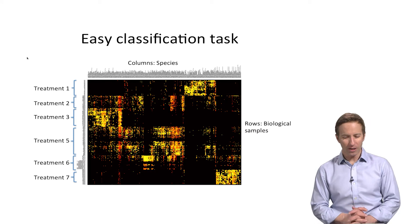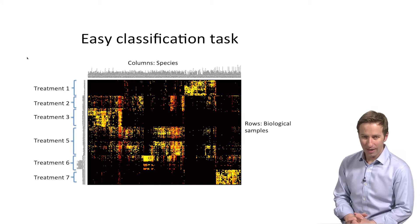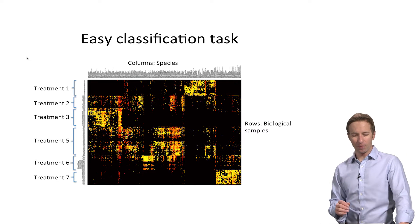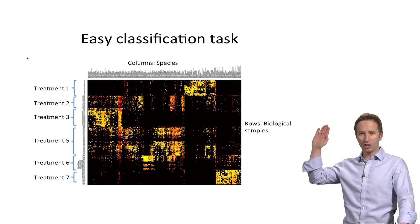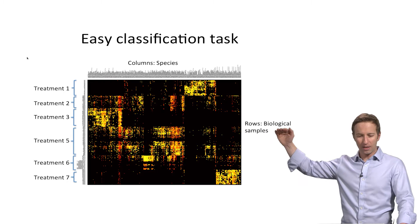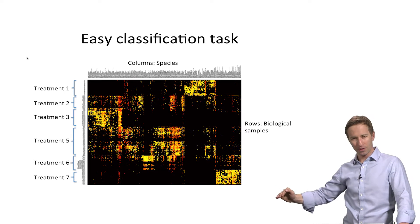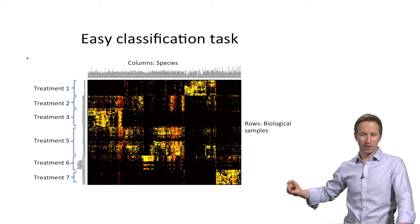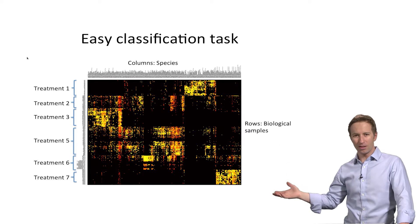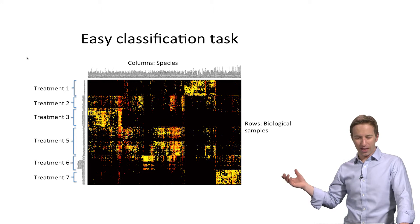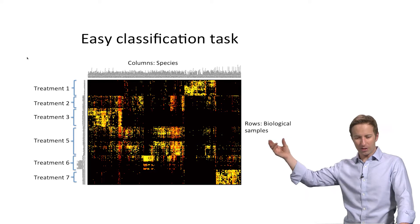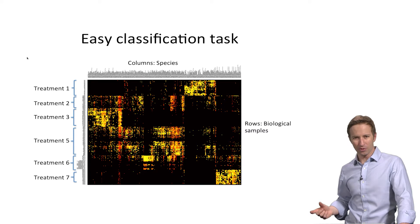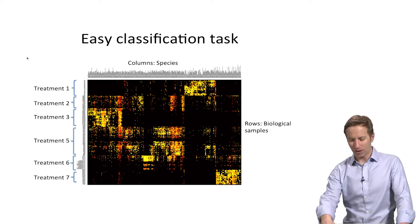So here's a picture of an easy classification task. This is a heat map of relative abundance of different species. So each column is a different species and then the rows are samples. And you can see there are several different treatment groups that we're trying to classify. And when you look at the relative abundances it's quite clear that there are very different sets of species in these different groups. So this is an easy classification task.